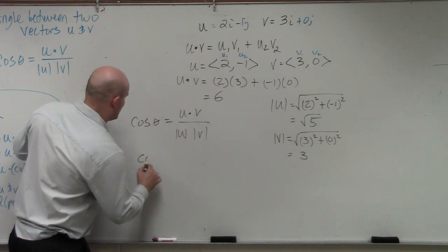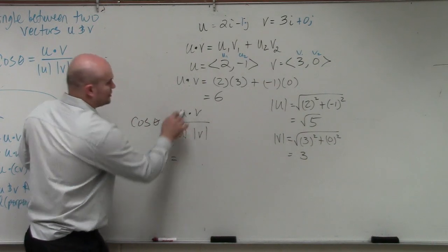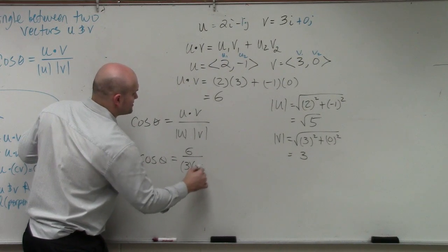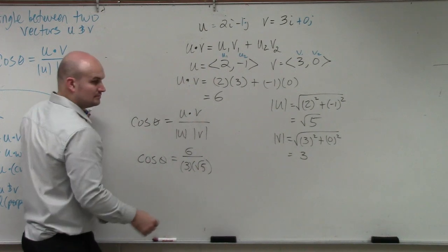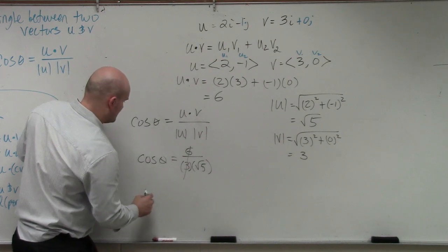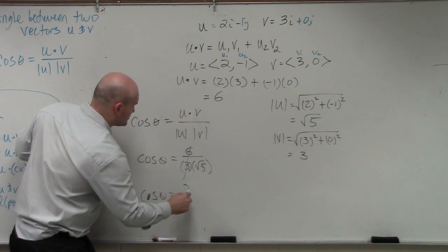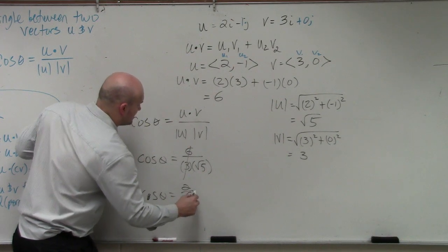So therefore, I have cosine theta. u dot v is 6, divided by 3 times the square root of 5. Well, that divides out to 2, correct? So I have cosine of theta equals 2 over the square root of 5.